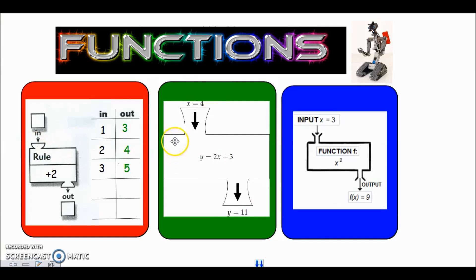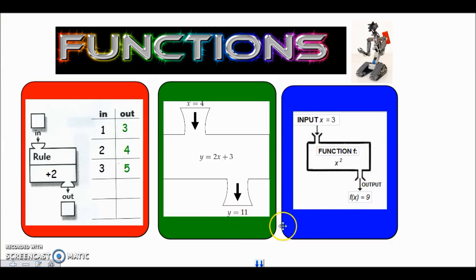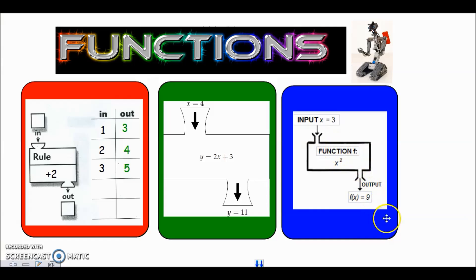When we use function notation it's very similar to what we've done before, but instead of having a y we use f(x) notation. You can think of f(x) as the y value. Similarly, you've got an x value going in. For example, the function f is to square whatever the x value is — so you put three in, it gets squared by our function, and out pops nine, because three squared is nine.